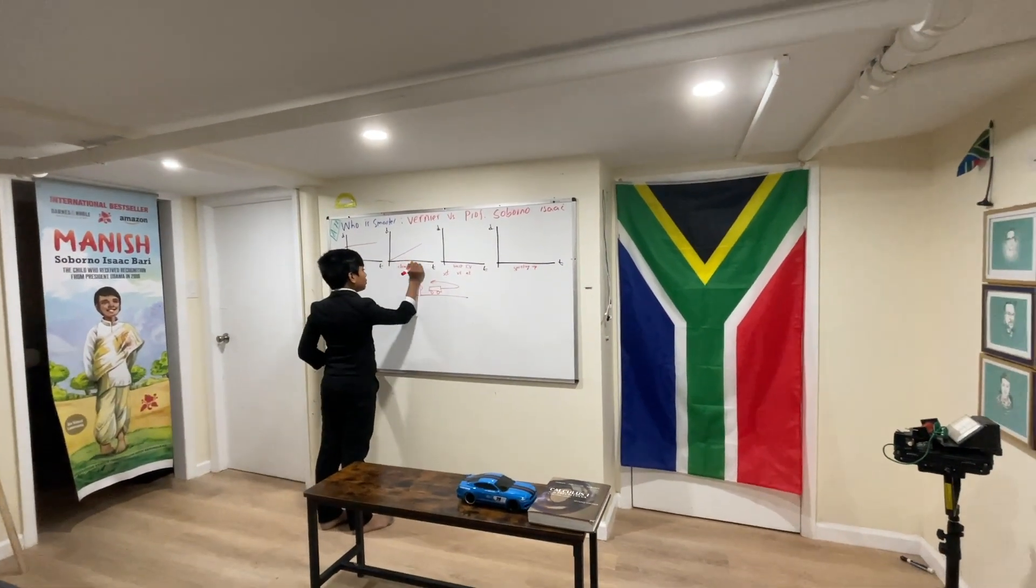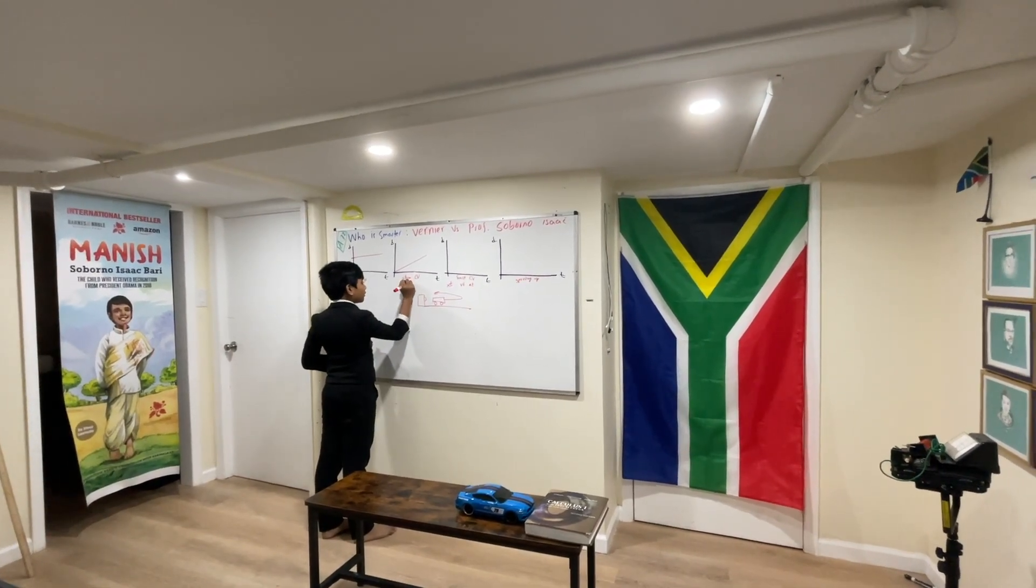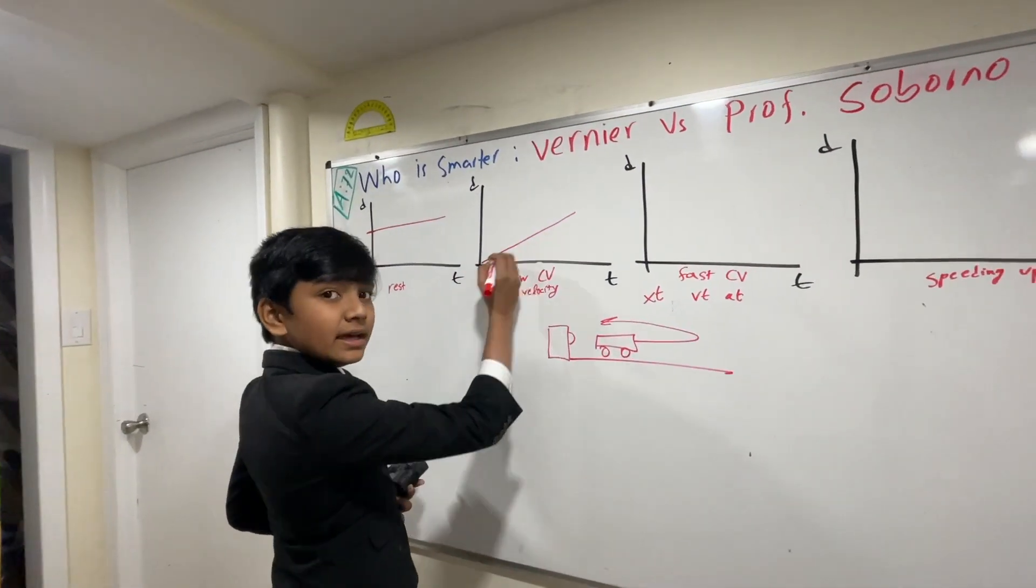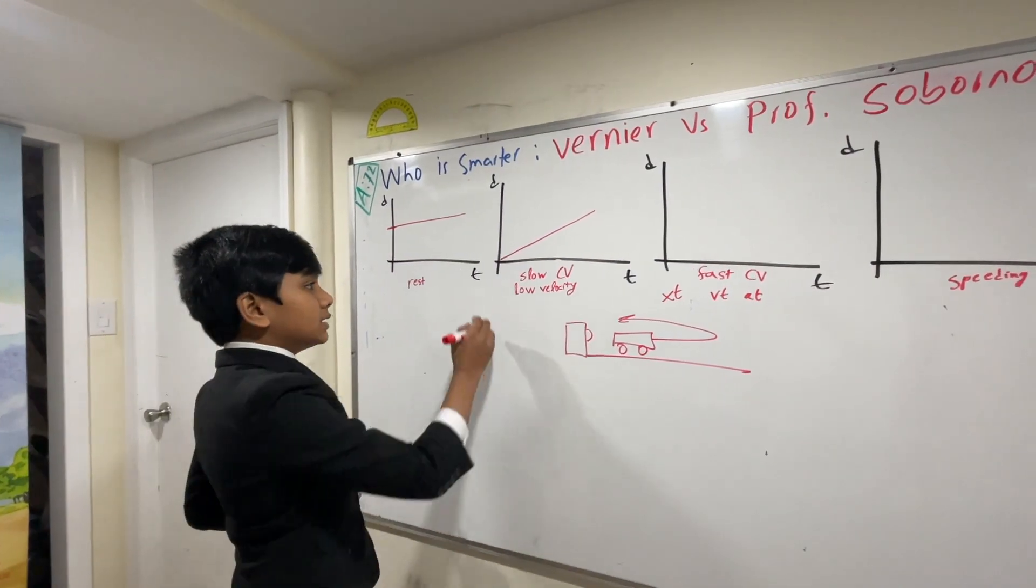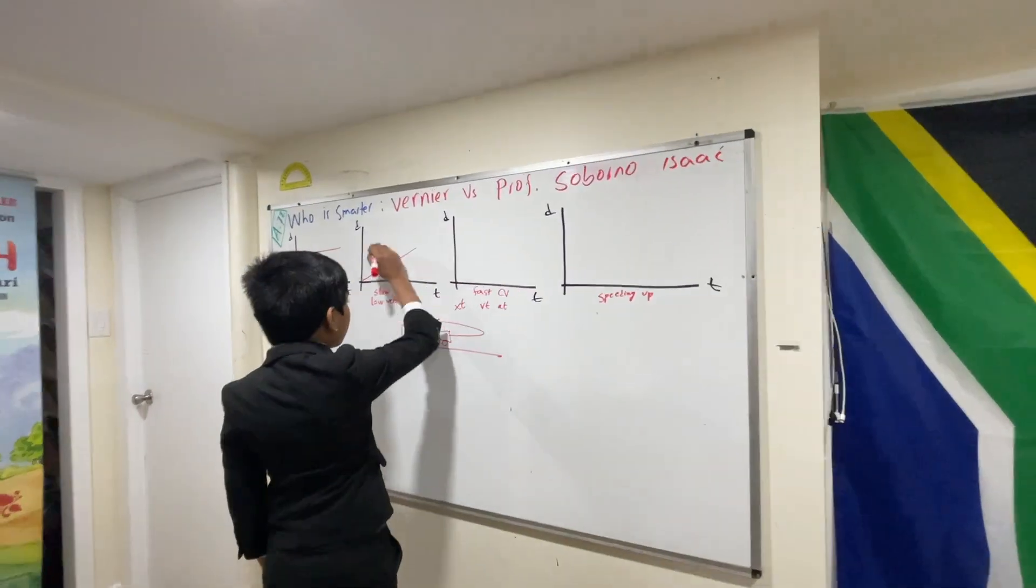so what I can draw it as is an increasing graph with a very small slope. Why? Because slow constant velocity means that there is a low constant velocity. If it's constant velocity, then the graph of displacement over time must be linear, because linear graphs have a constant slope.